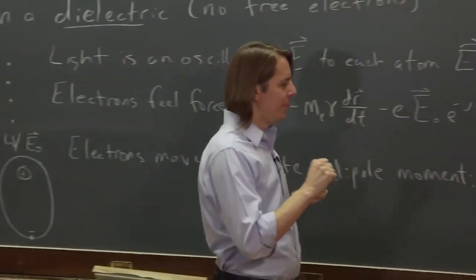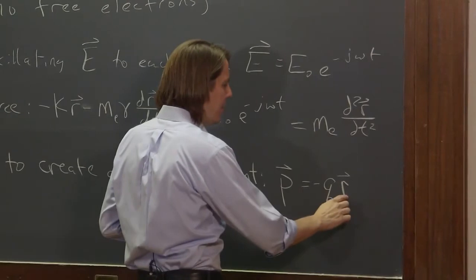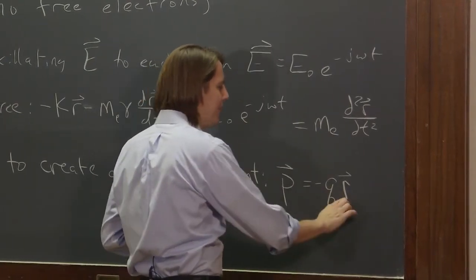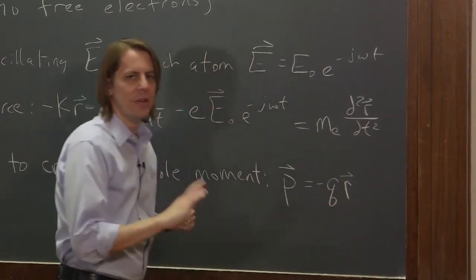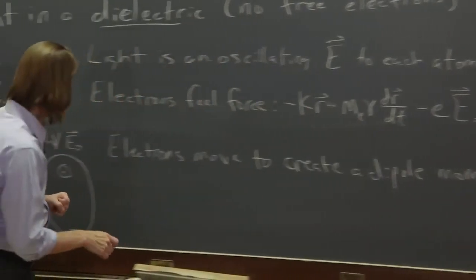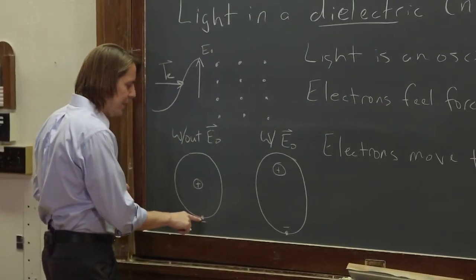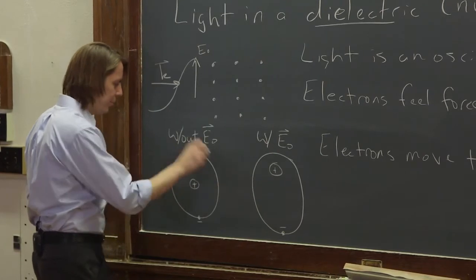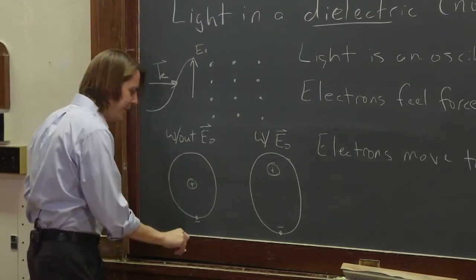Every book will define it a little different, and it can be very tricky. Here, we have defined, even though I didn't write it, we have defined R as the position of the negative charge. Okay? So here, the average position of the negative charge was in the center, because it's this circular cloud, and we have perturbed it down. So here, R is down.